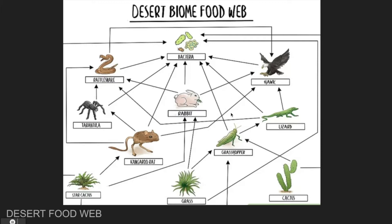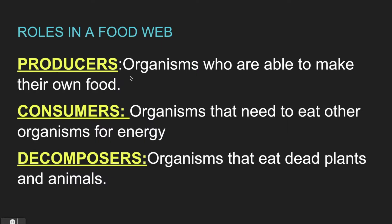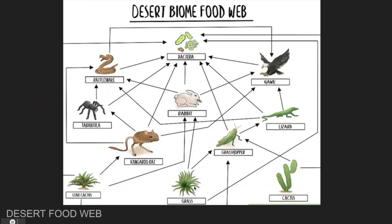Let's talk about the different roles in our food web. The first role we have is producers. Producers are those organisms who are able to make their own food. For example, the grass and these two cactus plants are examples of producers because they do not need to eat another organism for their energy. They get their energy from the sun and are able to make food with it.